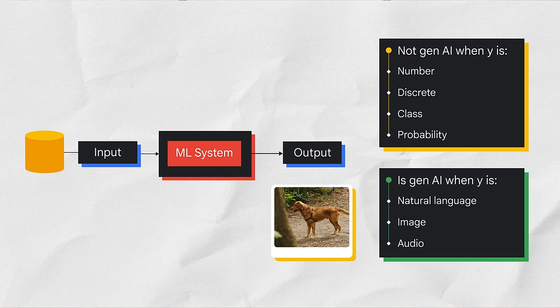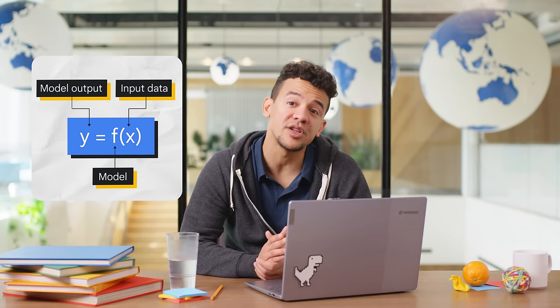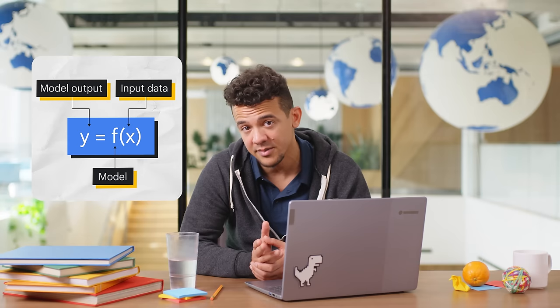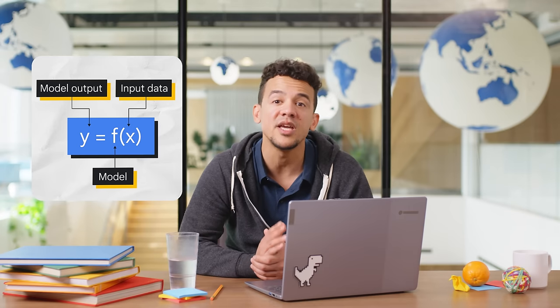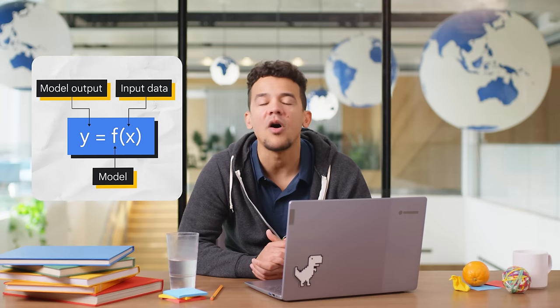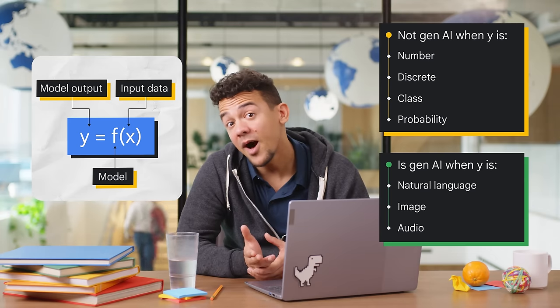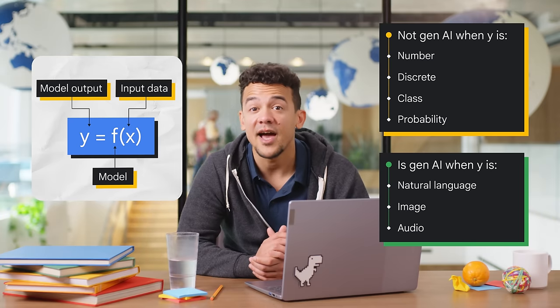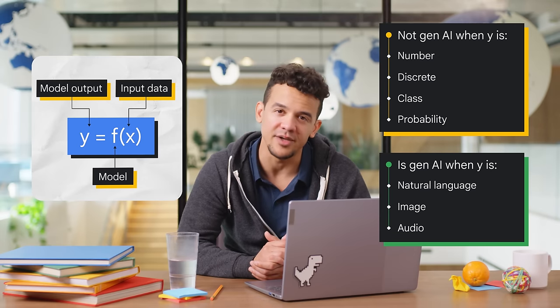Let's get a little mathy to really show the difference. The Y equals F of X equation calculates the dependent output of a process given different inputs. Y stands for the model output, F embodies the function used in the calculation or model, and X represents the input or inputs used for the formula. Inputs are data like comma-separated value files, text files, audio files, or image files. So the model output is a function of all the inputs. If Y is a number like predicted sales, it is not generative AI. If Y is a sentence like 'define sales,' it is generative, as the question would elicit a text response.